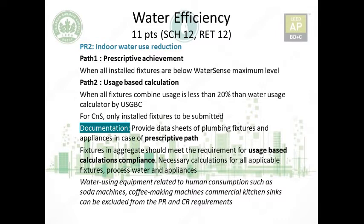There are some exemptions. Water-using equipment related to human consumption — coffee machines, commercial kitchen sinks, soda machines, ice machines — can be excluded not just from the prerequisite but also from the credit requirements.